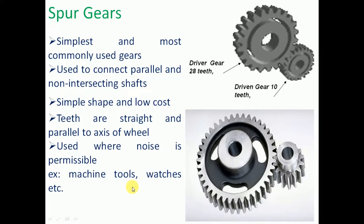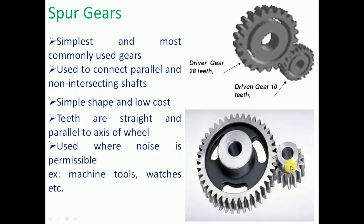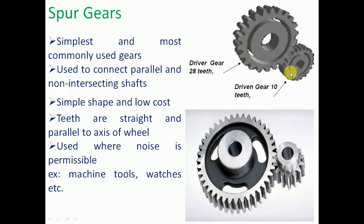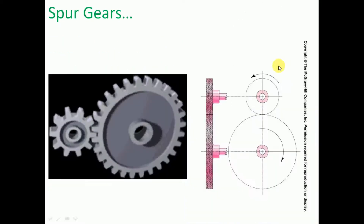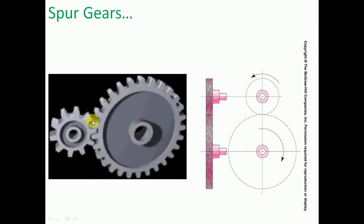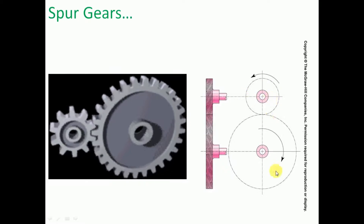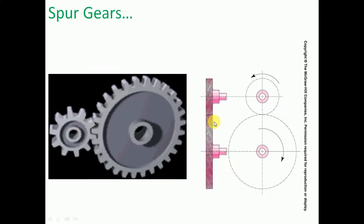Spur gears are used where noise is permissible, for example in machine tools and watches. The teeth are straight and parallel to the axis of the shaft. One gear is the driver gear providing power, and the other is the driven gear. We can see in the end view the spur gear rotation, where the teeth mesh with each other — the driver gear rotates in one direction and the driven gear rotates in the opposite direction.